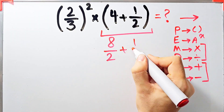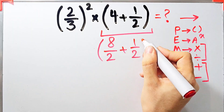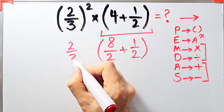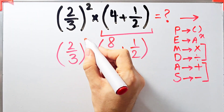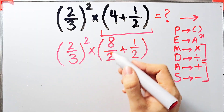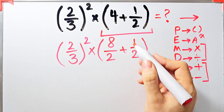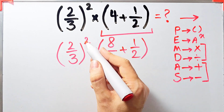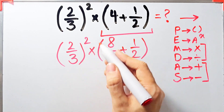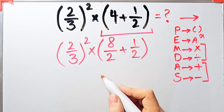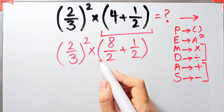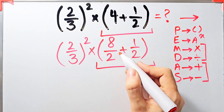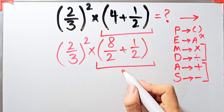The question is now two over three to the power of two, times open parentheses eight over two plus one over two. Inside the parentheses we have exponent, multiplication, and the addition to resolve. Eight over two plus one over two equals nine over two.